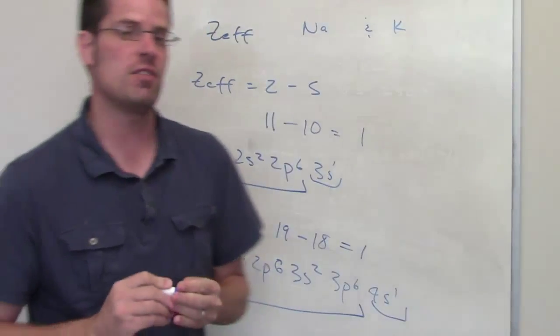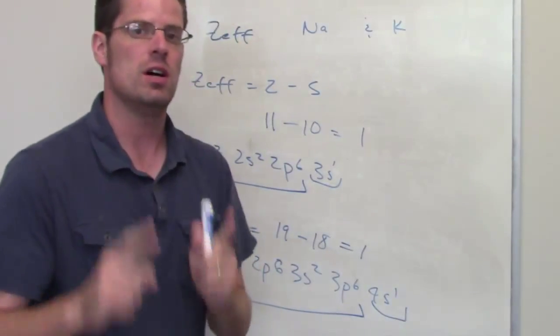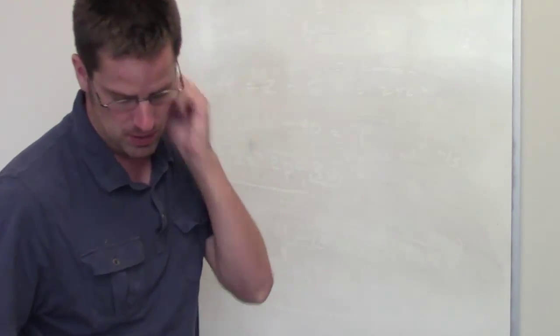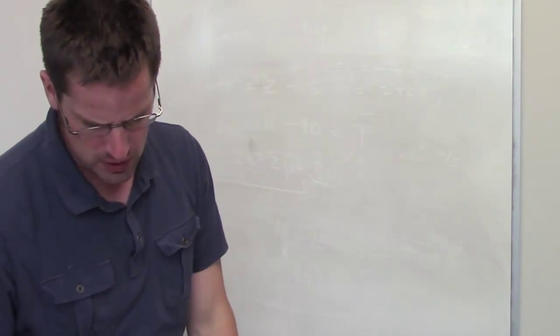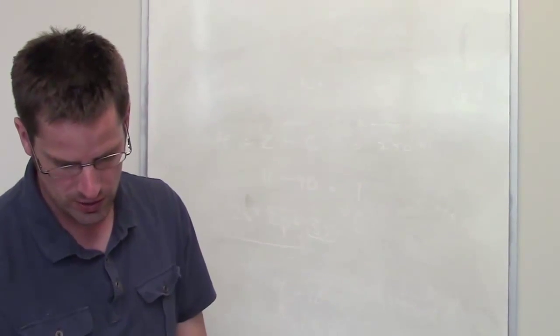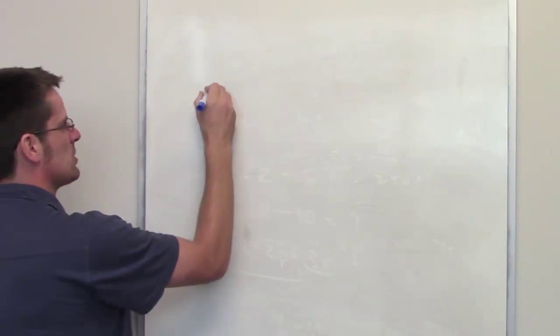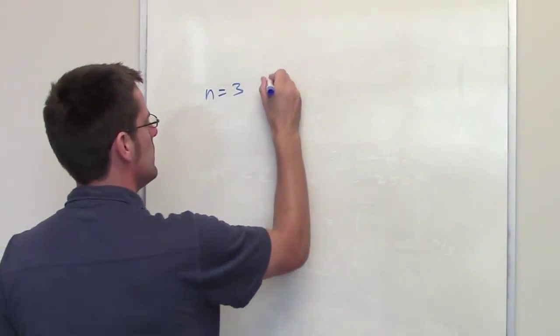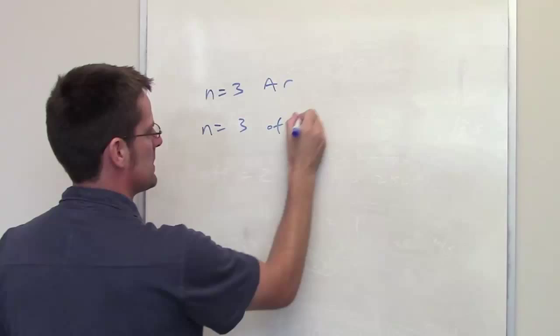So both of them have a Z-effective or effective nuclear charge of 1. The second question that I talked about in the previous video asks which will experience a greater effective nuclear charge: the electrons in the n equals 3 level of argon, or the electrons in the n equals 3 of krypton?